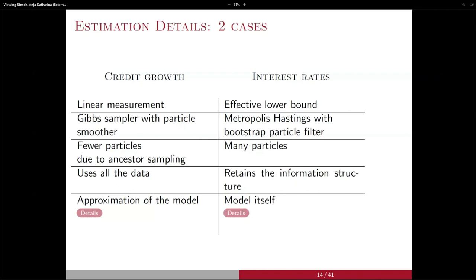We have two different applications that highlight two different flavors of the model. The applications also highlight some of the technical challenges when estimating these models. Because of the non-linearity, these models need to be estimated with a non-linear filter. For the credit growth application, we use a relatively new filter called the GIFS sampler with particle smoother — PIGASA for short — which is very useful in stochastic volatility models and is relatively efficient computationally; here the results use 1,000 particles.